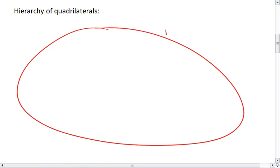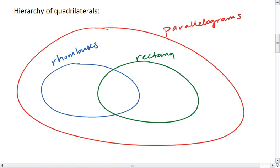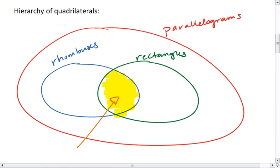This red circle represents all parallelograms. Within parallelograms, we have rhombuses, which are parallelograms with four congruent sides. We also have rectangles, which are parallelograms with four right angles. And in the space in between, where we have both rectangles and rhombuses, we have squares. So squares are a rectangle, a rhombus, and a parallelogram.